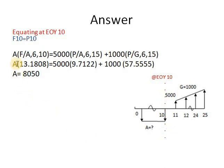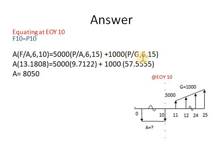The future of the annuity is F equals A into F/A at 6%, 10 years, equal to the present value of the gradient withdrawals: P equals A into P/A, since it is 25 minus 10 = 15 periods, plus the gradient of $1,000 into P/G at 6%, N=15. By equating, you get the value of the annuity.